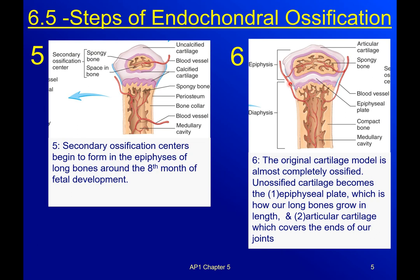Step six: the original bone model is almost completely ossified. The articular cartilage is still in place, and this region is going to be our epiphyseal plate — our growth plate. The unossified cartilage becomes the epiphyseal plate, which is how our long bones grow in length and get longer. The articular cartilage covers the ends of our joints and we never want it replaced with bone.